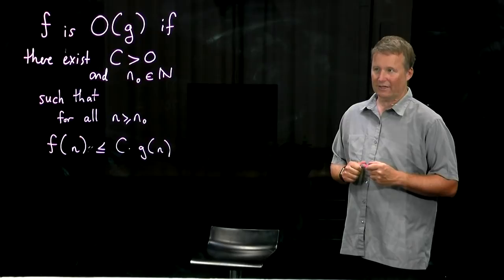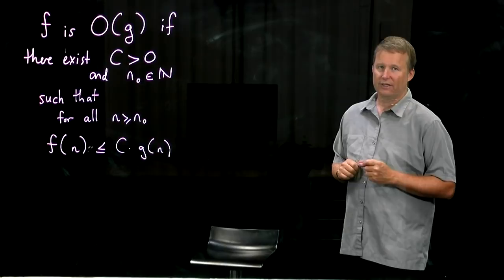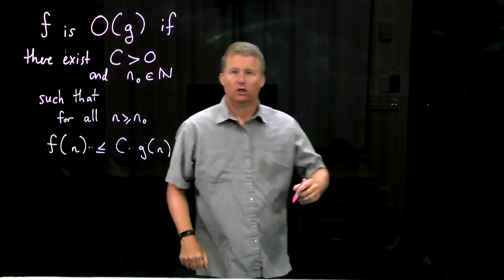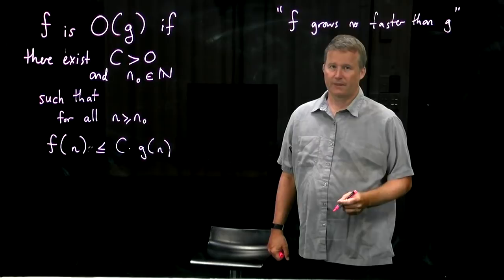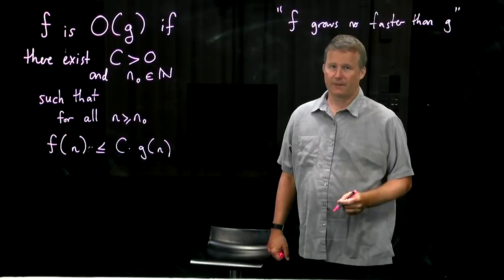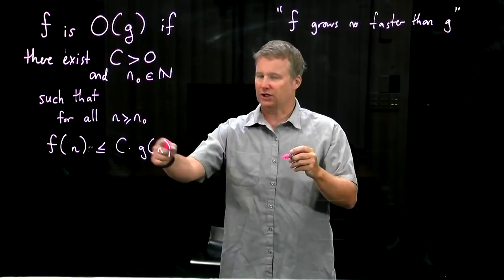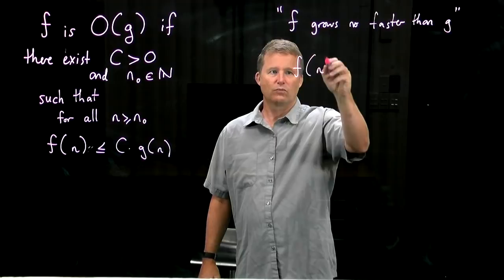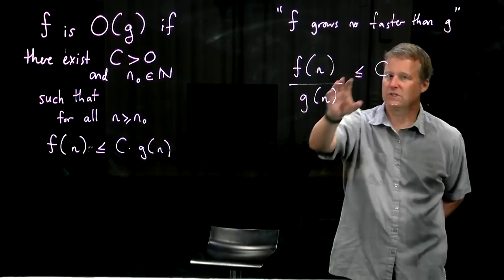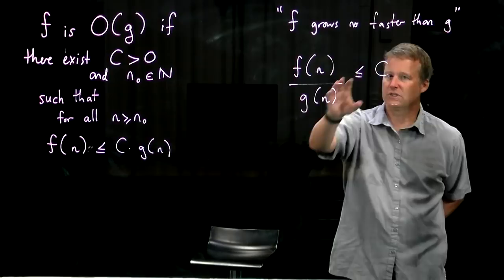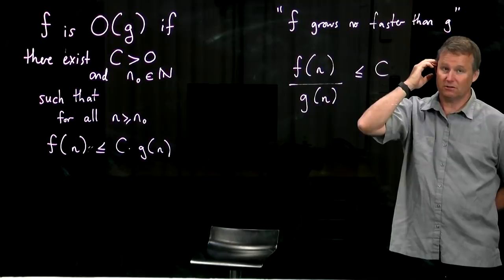That's the formal definition and we have to spend some time understanding it. But this really does capture everything that we want in terms of the intuition of growth rates. So what we say here intuitively is that f grows no faster than g — that's the way to remember it. To give a little bit more insight, imagine that g of n is never equal to 0. Then, since everything is positive, I can divide through, and what it's saying is that the ratio of f to g is no more than some fixed amount — f never outruns g by more than a fixed amount.